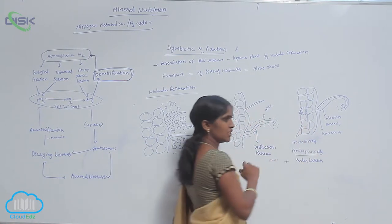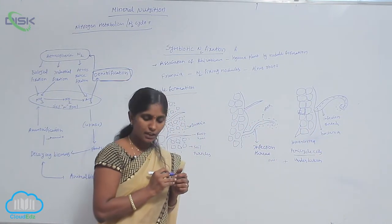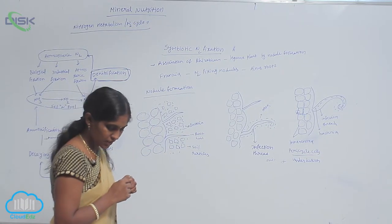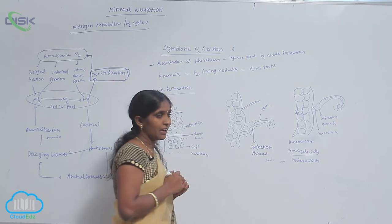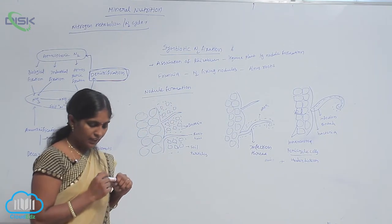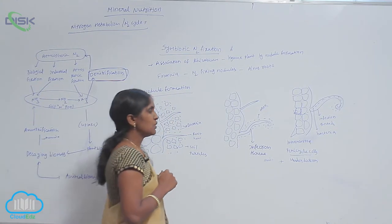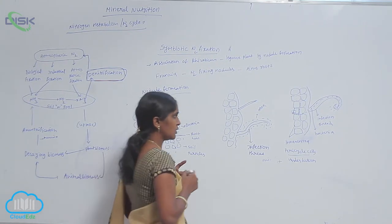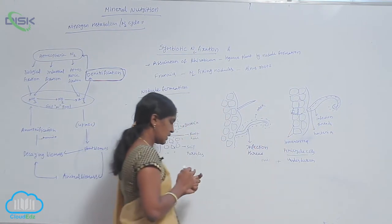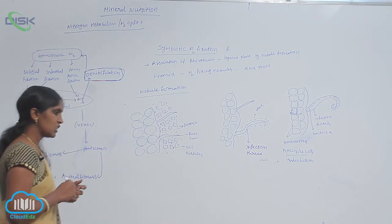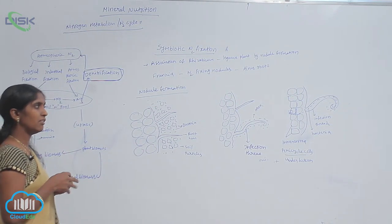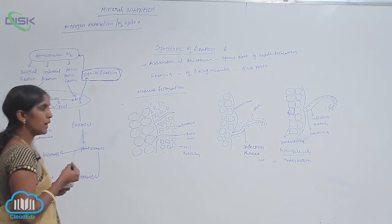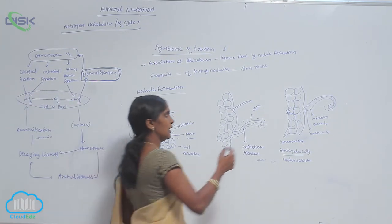Once inside, the cells undergo multiple divisions. The bacteria are released from the thread, multiply, and this promotes the nodule formation. The bacteria entry into the cortex of the root nodule occurs by infection thread.